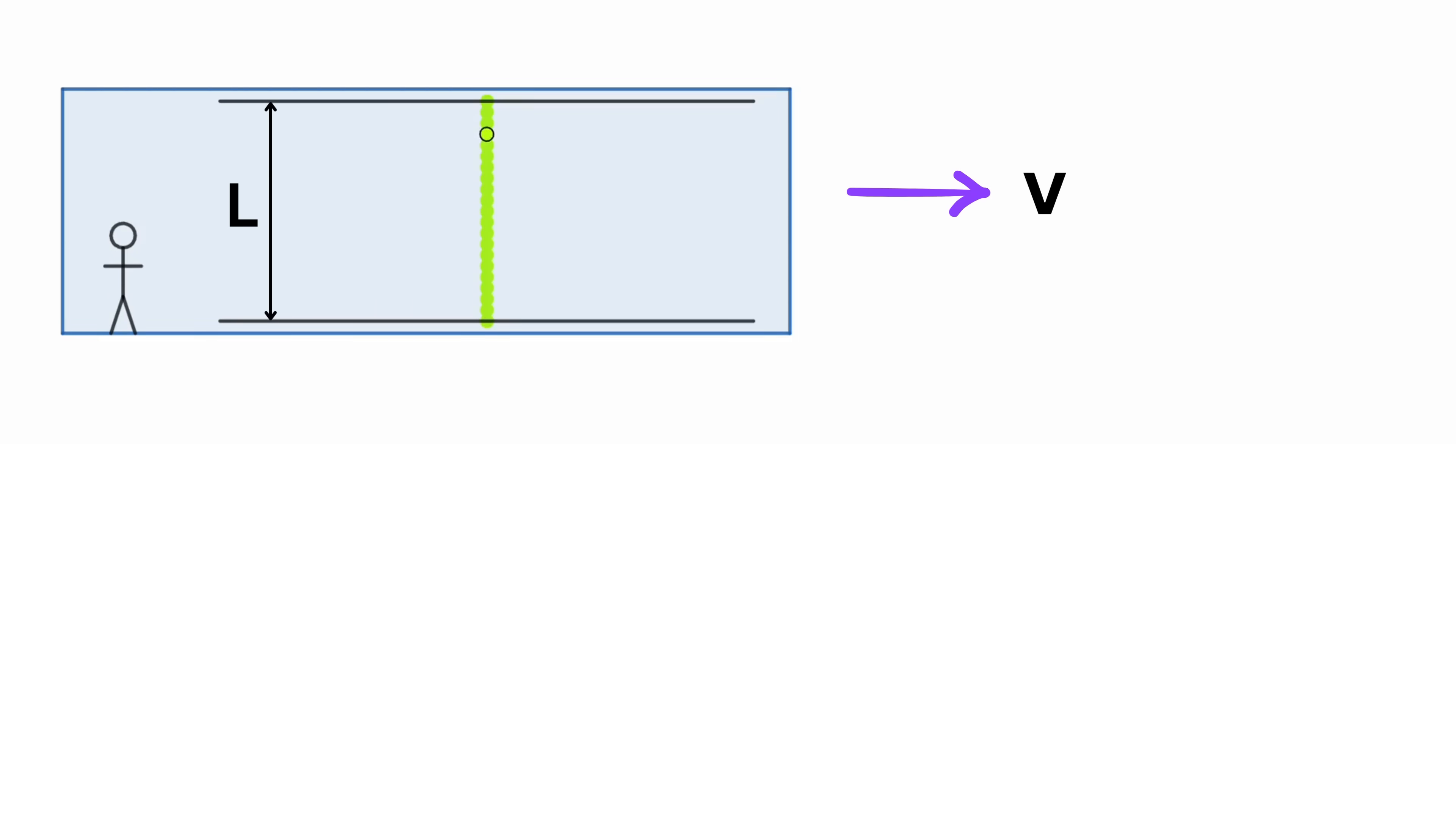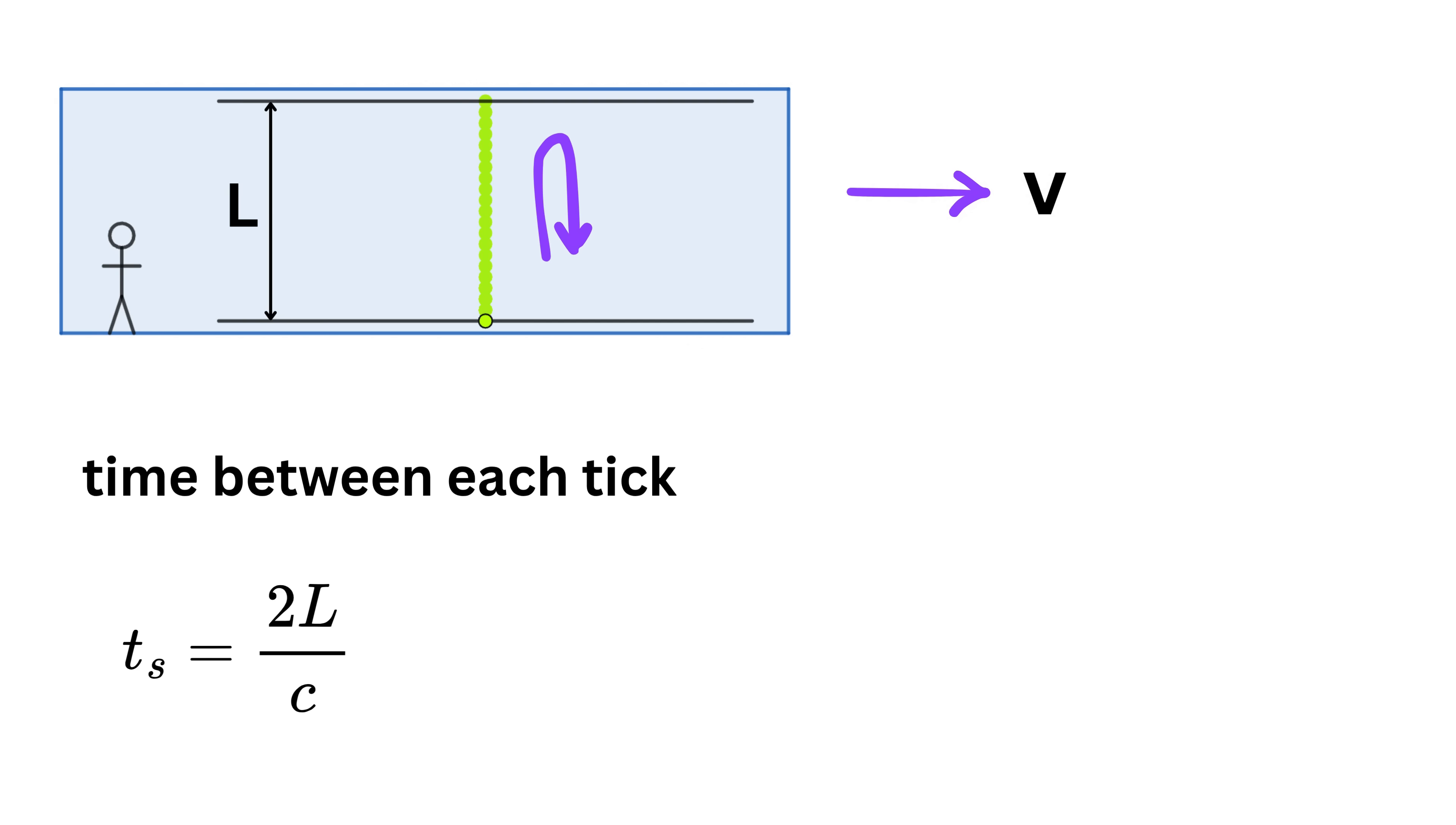It's a simple vertical journey, like a ball bouncing between two hands. So the time between each tick is just the time it takes for light to go up and come back down. If we call it ts, or time for an observer inside the spaceship, then it equals 2L/c, because time equals distance over speed, and thus it will be L/c for upward motion and L/c for downward motion.